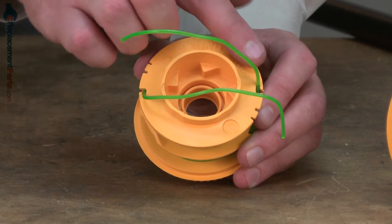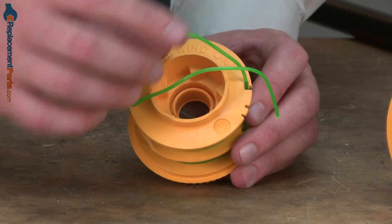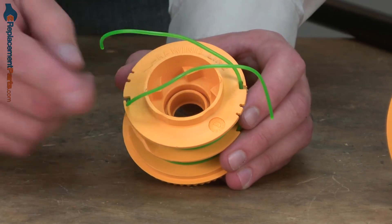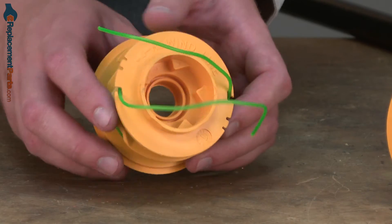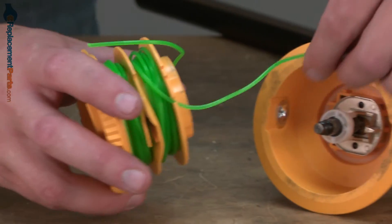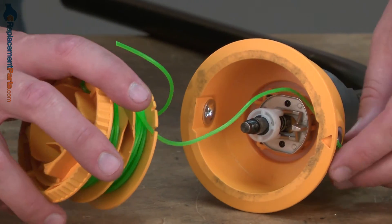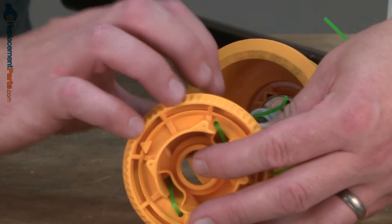You'll notice there's these clips on either side of the head and those are to temporarily hold the line while we insert the spool into the trimmer head. So I'll line up each of the trimmer lines with the eyelets on the trimmer head.